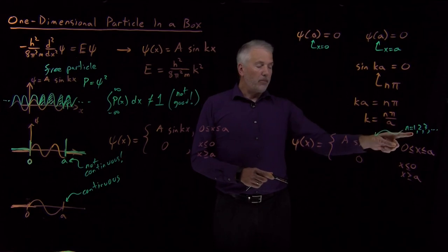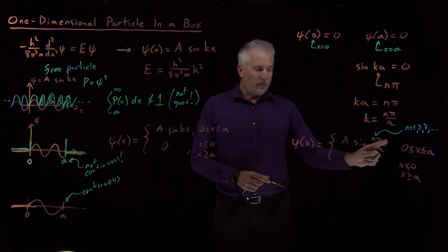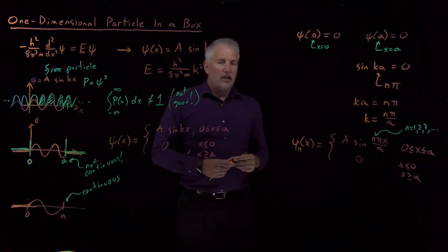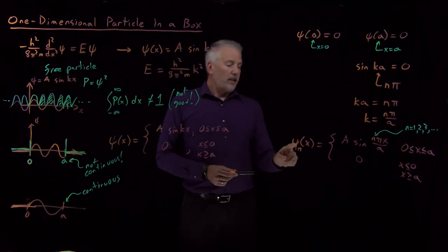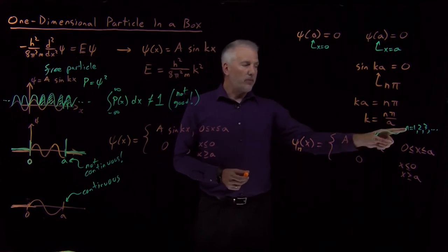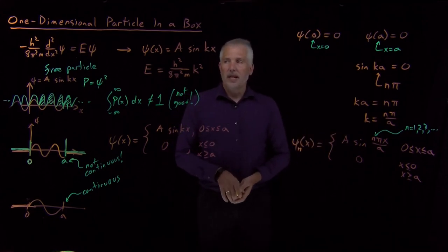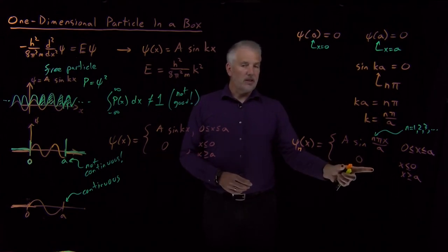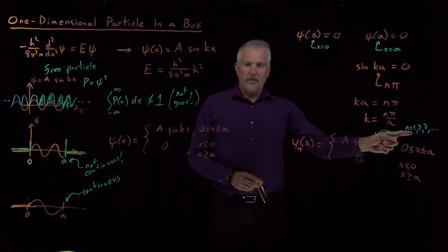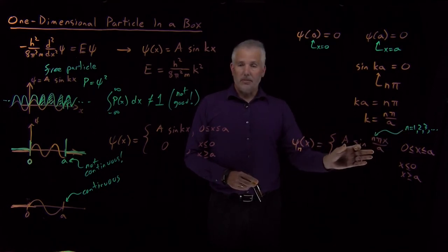We still have an infinite number of solutions: A sine of πx/a, A sine of 2πx/a, A sine of 3πx/a, and so on. That infinite family of solutions can each be labeled with the integer n. But notice something important: before, k could be any value. Now, n can only be certain discrete, specific, quantized values. The wave function is only allowed to be certain things and not others.